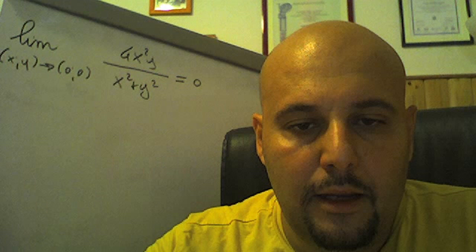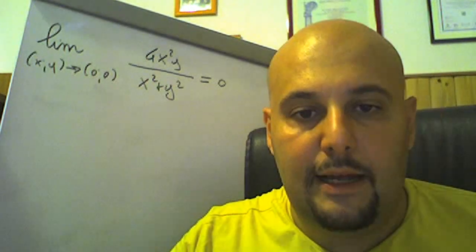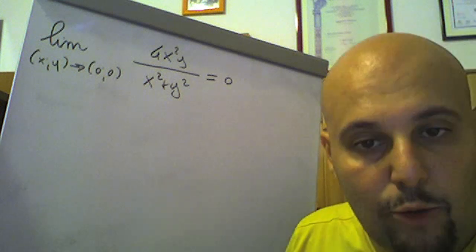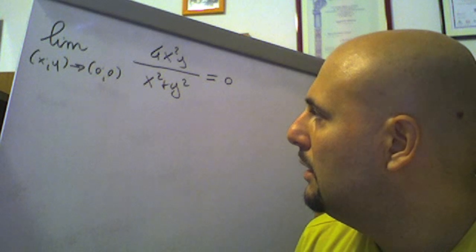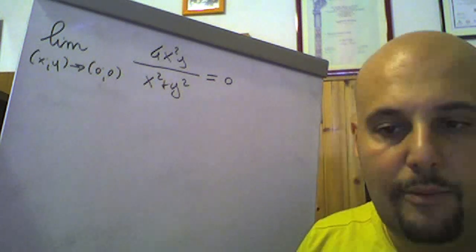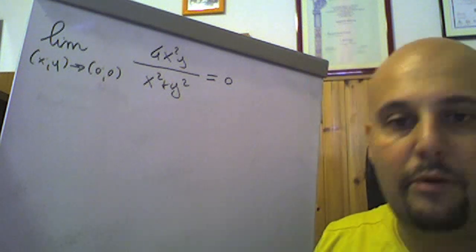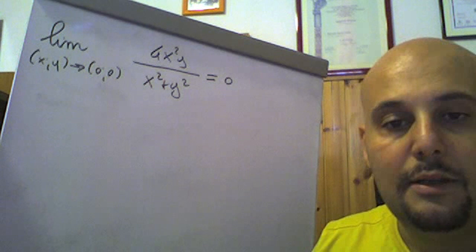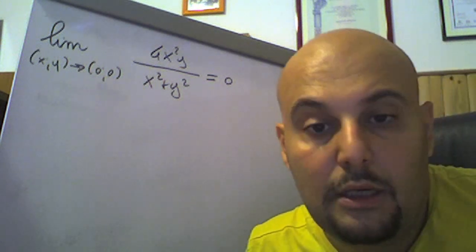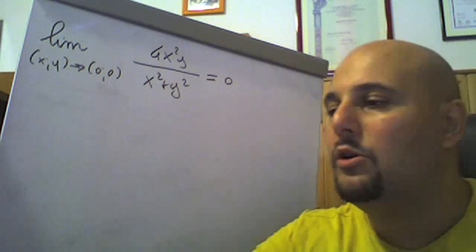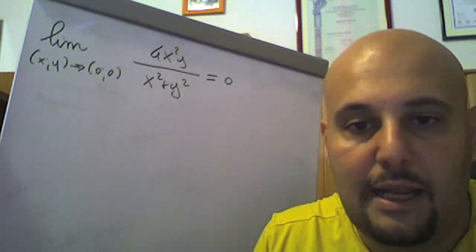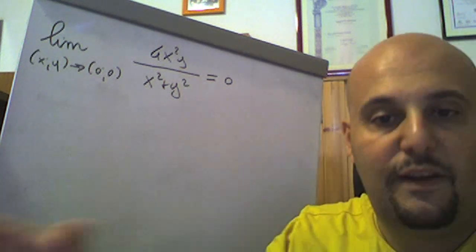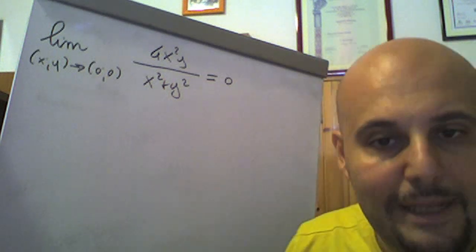Vediamo un altro esempio. Verificare che il limite per (x,y) → (0,0) di 4x²y/(x²+y²) sia nullo, tende a 0. La domanda è: quale tecnica utilizziamo? La tecnica dei percorsi, le rette passanti per l'origine, le coordinate polari, le curve parametriche? Qui dovremmo dimostrare che, qualunque sia il percorso nell'arrivare a (0,0), si arriva allo stesso risultato. Diventa lunghissimo il calcolo; conviene applicare direttamente la definizione di limite.